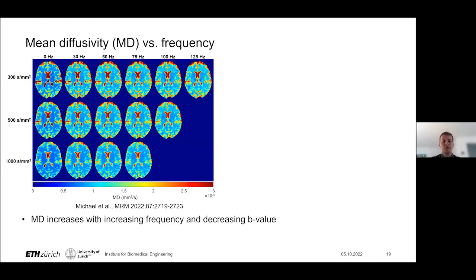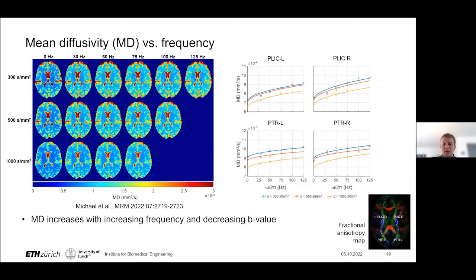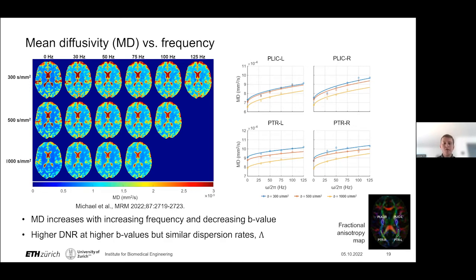Moving on to results: this slide shows a representative imaging slice and the mean diffusivity maps acquired across all frequencies and b-values. The main thing to note is that we have increasing mean diffusivity with increasing frequency going from left to right, and with decreasing b-value going from bottom up. This trend can more easily be seen in a plot showing diffusivity versus frequency for various white matter regions, with the diffusion dispersion model fitted separately for each b-value. The same trends are seen — diffusivity increasing with frequency and with decreasing b-value — and the dispersion rates are apparently the same across all b-values. Also notable: we have a higher diffusion-to-noise ratio at higher b-values.